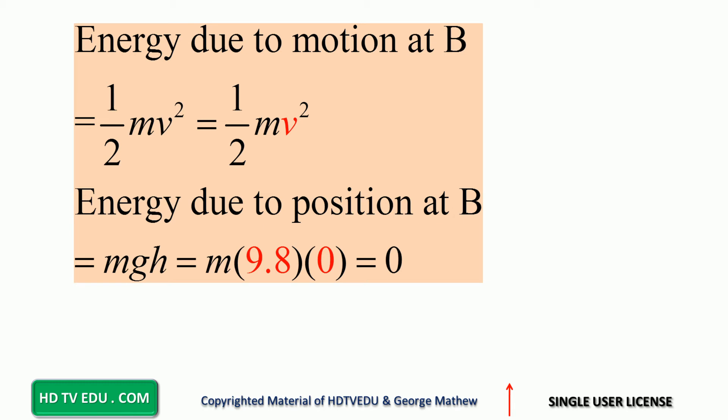Because point B is where we put the zero level, the height of point B from the zero level will be zero, so potential energy at point B will be zero. So energy at point B is all due to motion, one half mv squared.